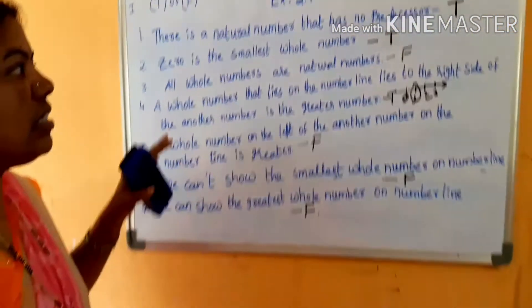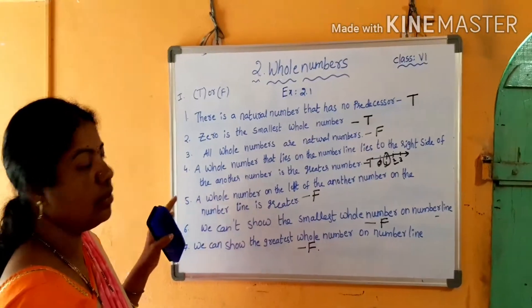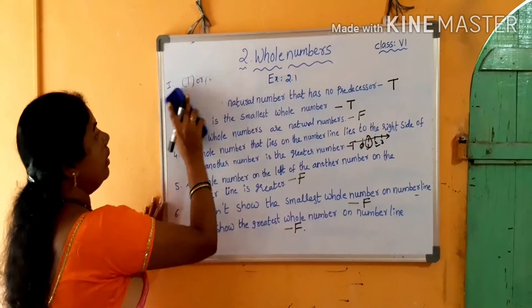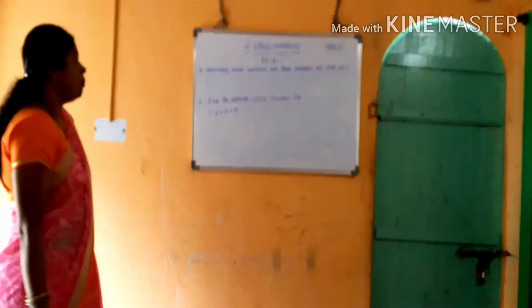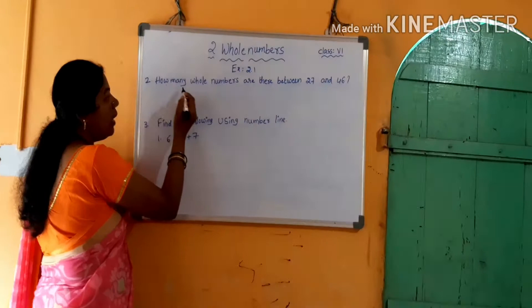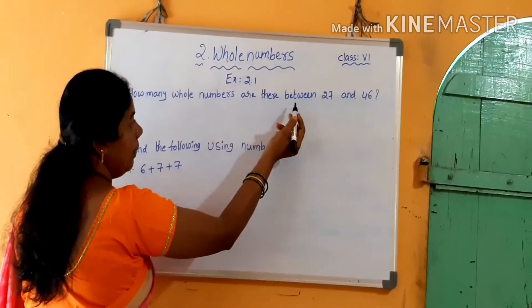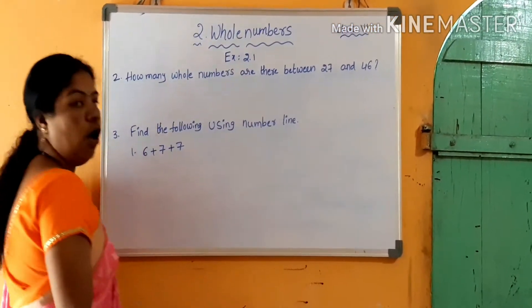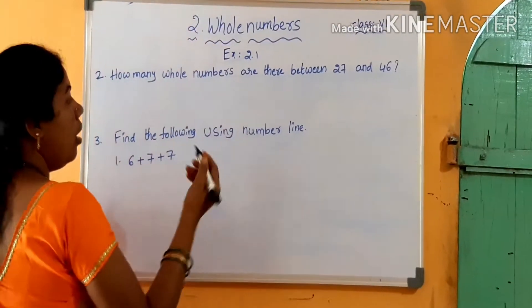This is the first bit of the exercise. Next, the second bit: how many whole numbers are there between 27 and 46?